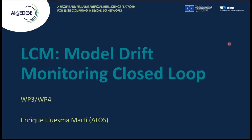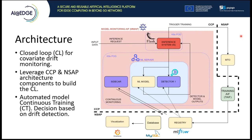In this first slide, we can see the diagram of the demo in which we have basically leveraged some of the components of the AI/ML architecture, some of them from the CCP and some of them from the NSAP. This closed loop is basically intended to detect cases of drift of a machine learning model that is being served within an AIF.